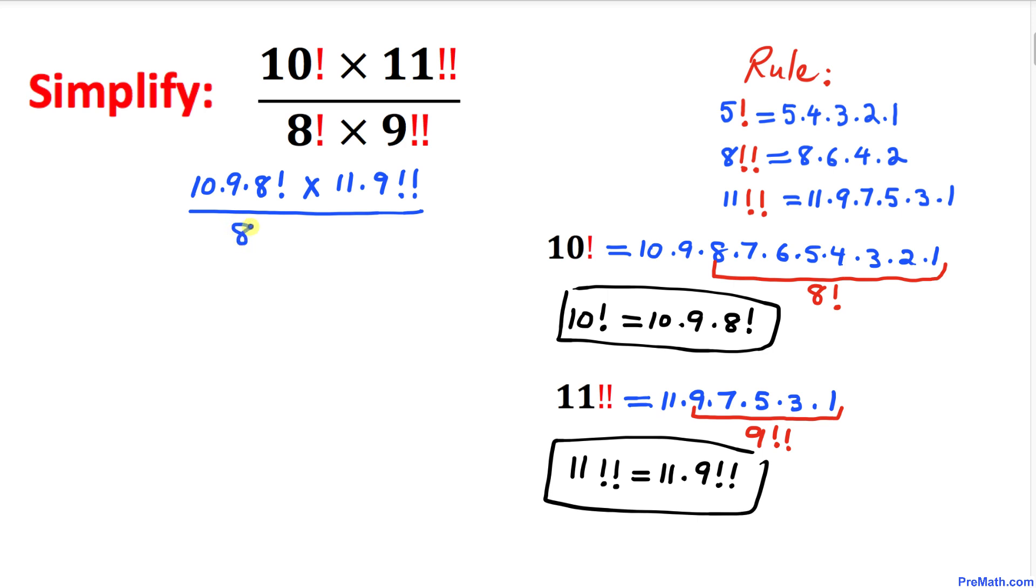Now we can see that this 8 factorial and this 8 factorial, they cross out. Likewise, this 9 double factorial and this 9 double factorial, they are gone. So we are left with 10 times 9 times 11.